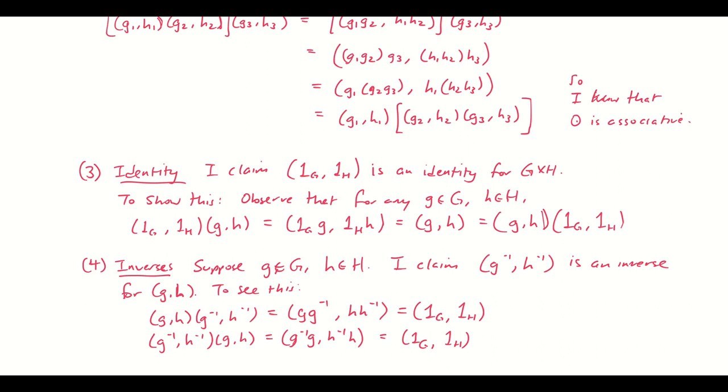So I know that my G cross H has closure. It has associativity. It has an identity element. And each element has an inverse. Therefore, I can finally say, therefore, G cross H is a group under circle dot. Hooray. This video is already clocking in at about 10 minutes. So I'm going to stop there and do a couple of examples in the next video.